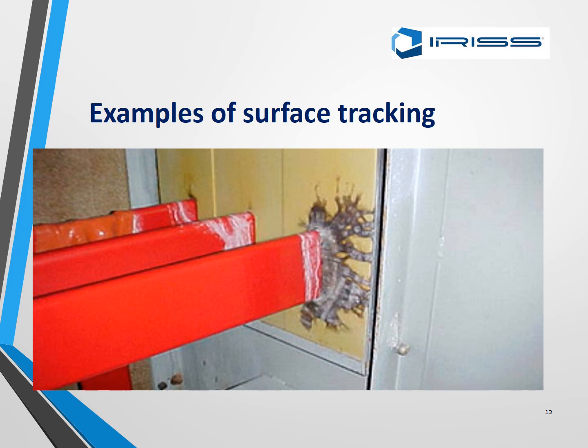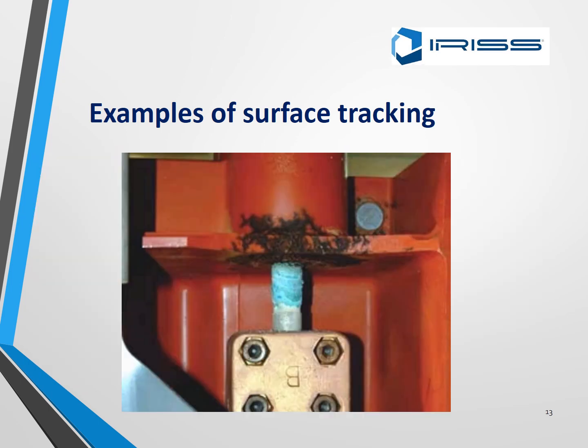Another example of tracking — this is a bit more severe. Around the busbars you can see the white residue, which is the first part of the corona. This has been left to continue and that is why the tracking has got worse. In this next example the tracking is getting darker because the white residue powder has now started to oxidize, changing colour.